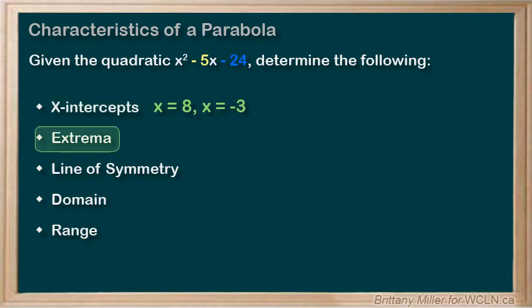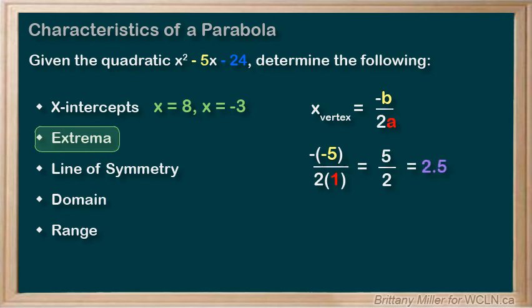To find the extrema, we need to recall that the x value of the vertex will be negative b divided by 2a. Negative negative 5 divided by 2 times 1 is just 5 divided by 2, which is a nice 2.5.